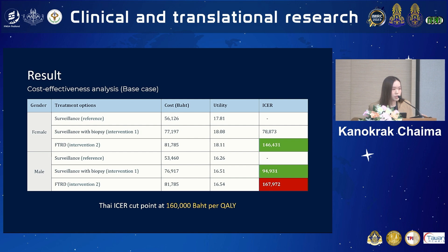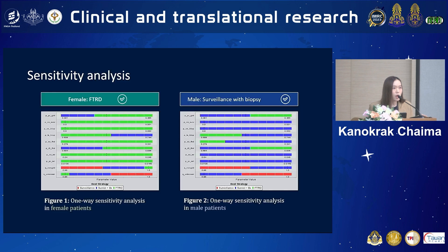This shows the results of our cost-effectiveness analysis. Based on the Thai ICER cut point at 160,000 baht per QALY, we found that the cost-effective intervention for female is FTRD, whereas for male it is surveillance with biopsy. One-way sensitivity analysis also confirms that FTRD is cost-effective in most scenarios for female, and surveillance with biopsy is cost-effective in most scenarios for male.